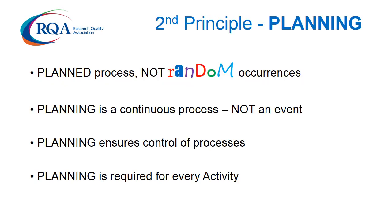The second principle is planning. All research and development should be a planned process, not a series of random occurrences. Planning is a continuous process, not an event. It controls the predictable and reacts to the unpredictable to ensure that the process is under control at all times and that there is clear understanding of cause and effect.